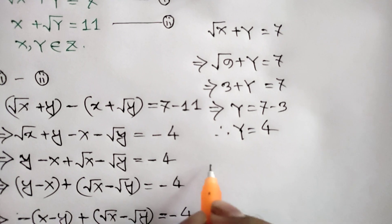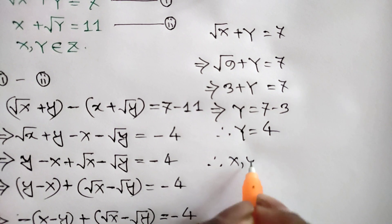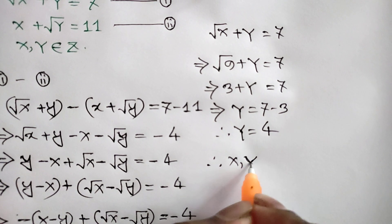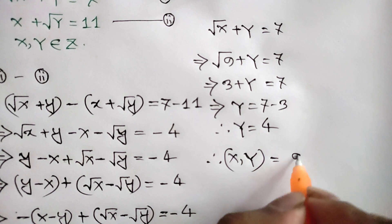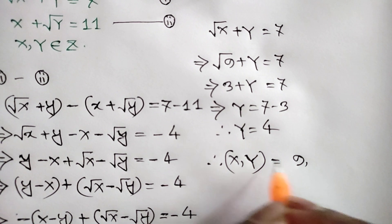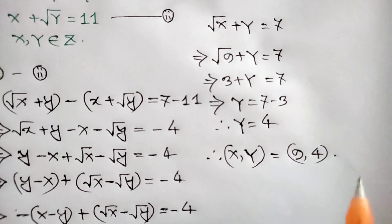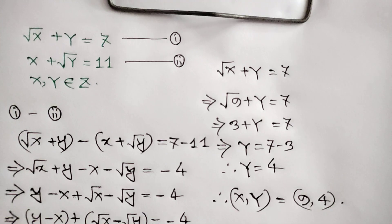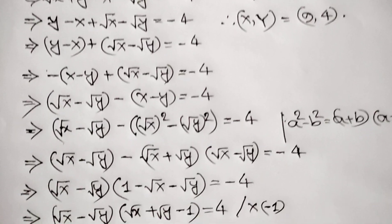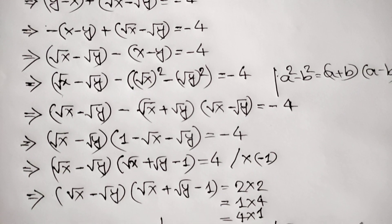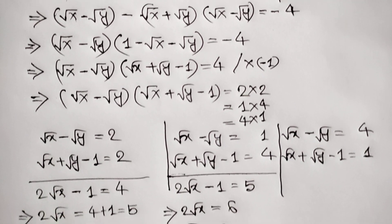So finally the value of y is equal to 4. We can write the solution as x comma y is equal to 9 and 4. Thanks for watching. If you like this video please subscribe to my channel, and see you in the next video. Bye bye.